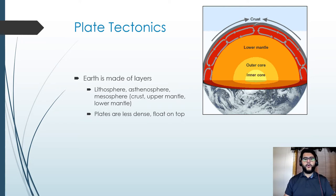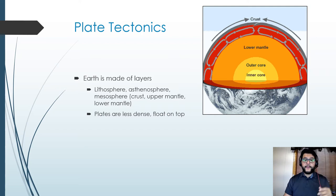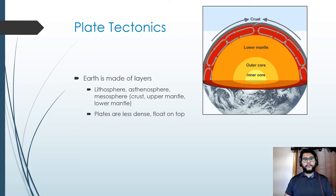These terms mean the same thing, so it's important to understand that the lithosphere is that top layer — that's the crust. The asthenosphere is going to be the upper mantle, and then you have the mesosphere which is the lower mantle. We live on the lithosphere, which is the crust.